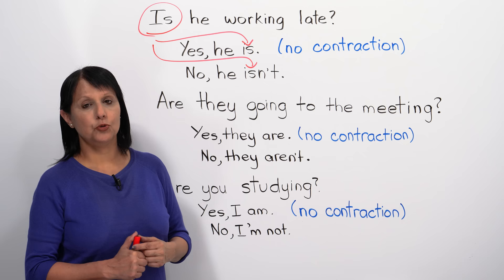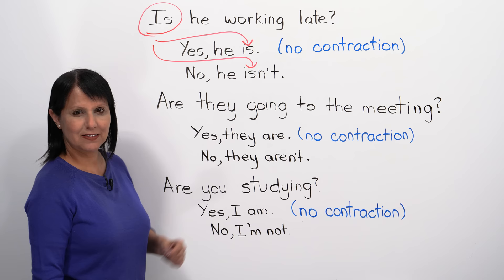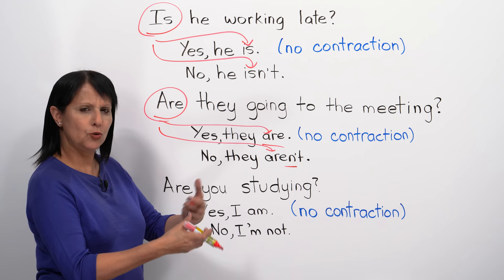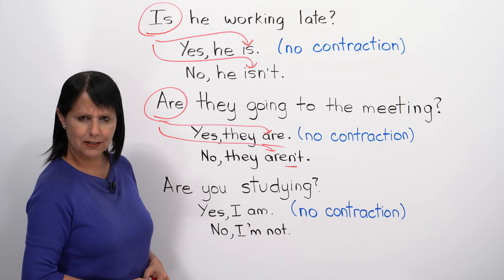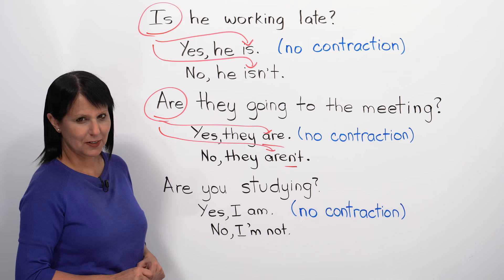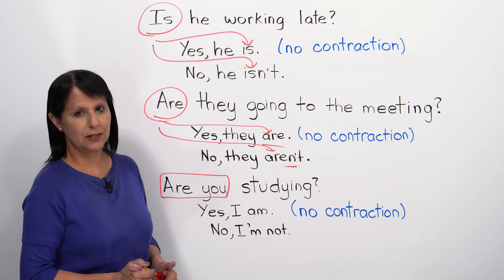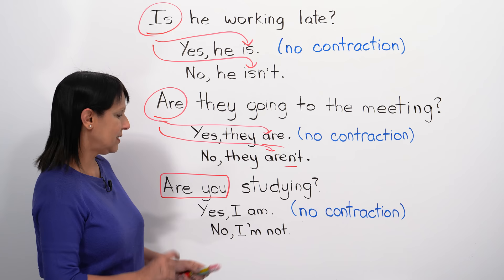For example, 'Are they going to the meeting?' — 'Yes, they are' or 'No, they aren't.' You take your answer clues from the question, and again, no contraction is possible in a positive short answer. Here's another example: 'Are you studying?' In this case, the answer changes person: 'Yes, I am' or 'No, I'm not.' You don't have to say 'Yes, I am studying' — just say 'Yes, I am' or 'No, I'm not.'